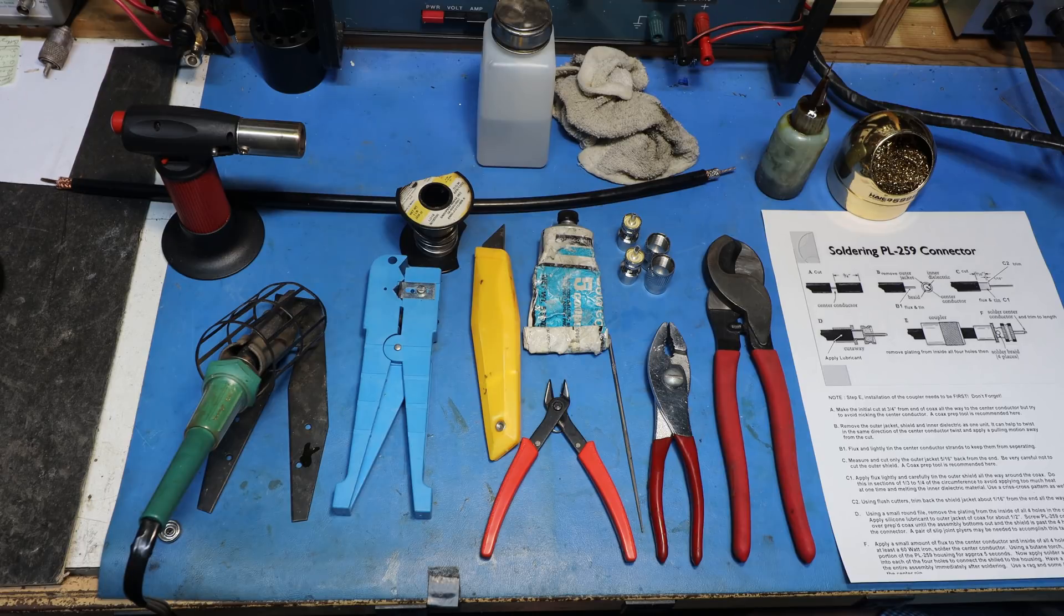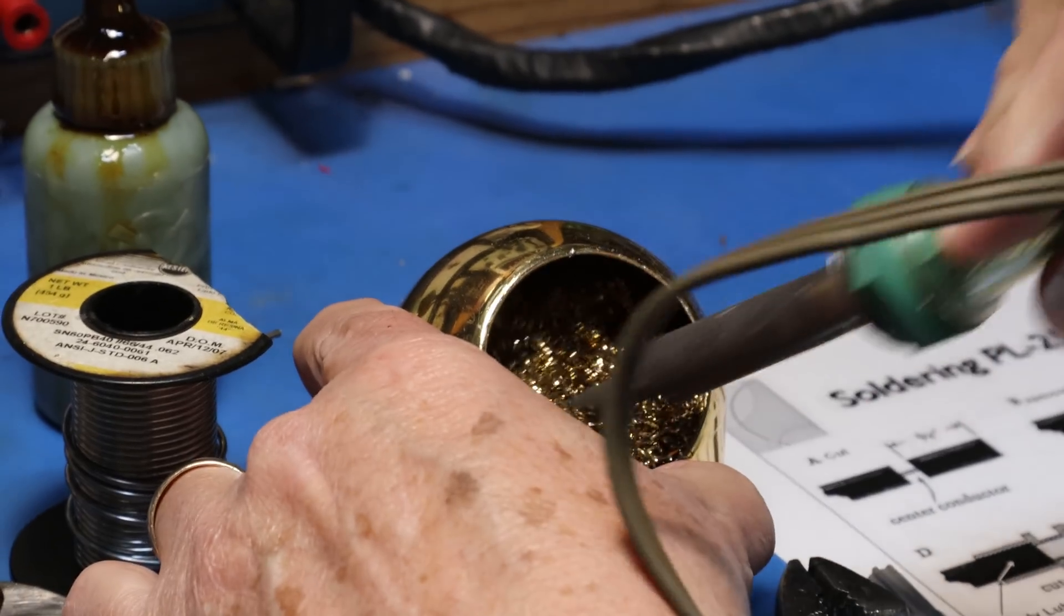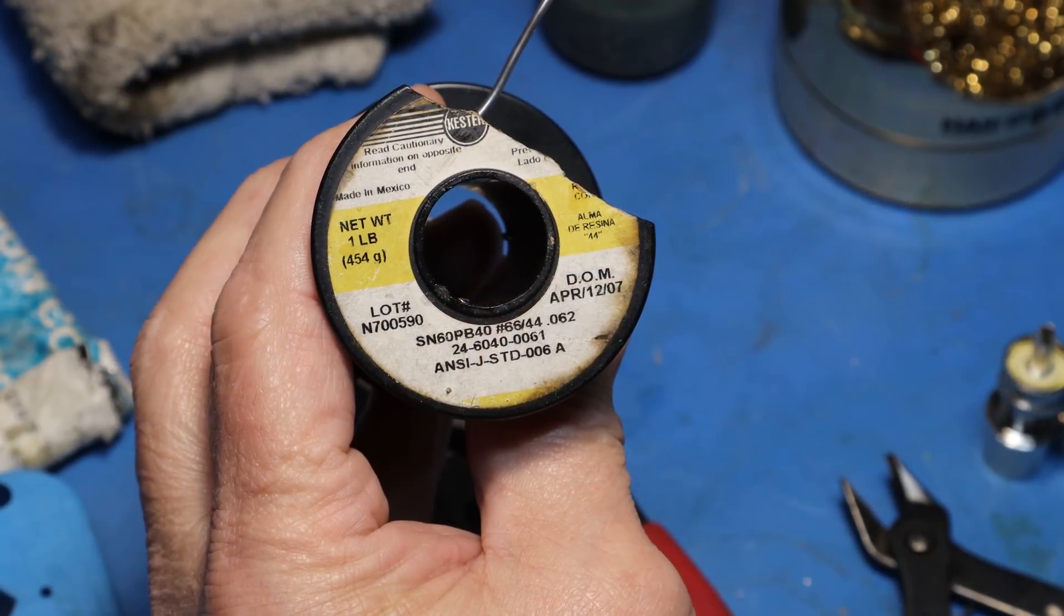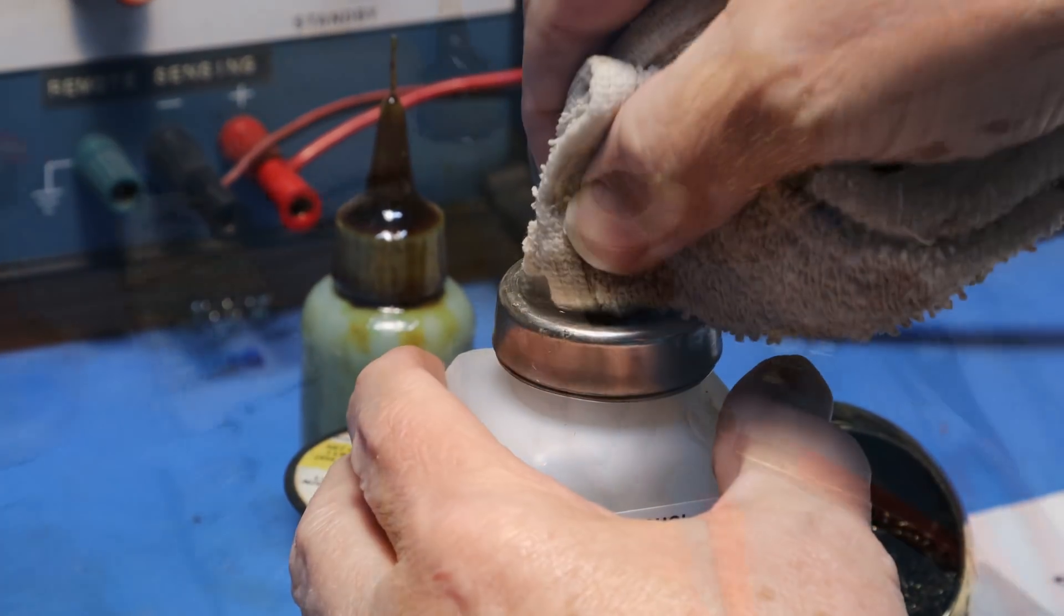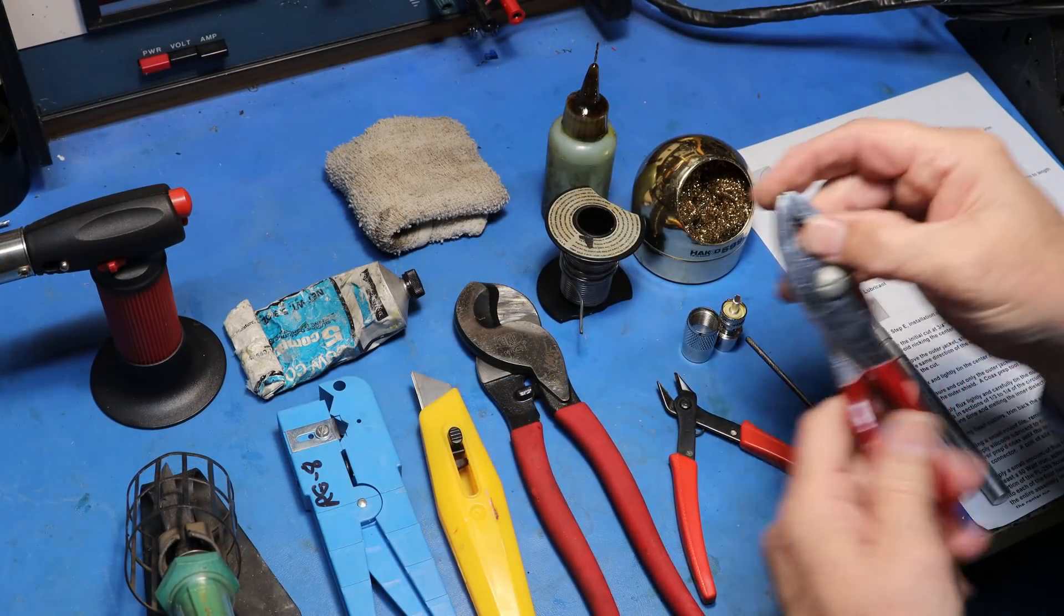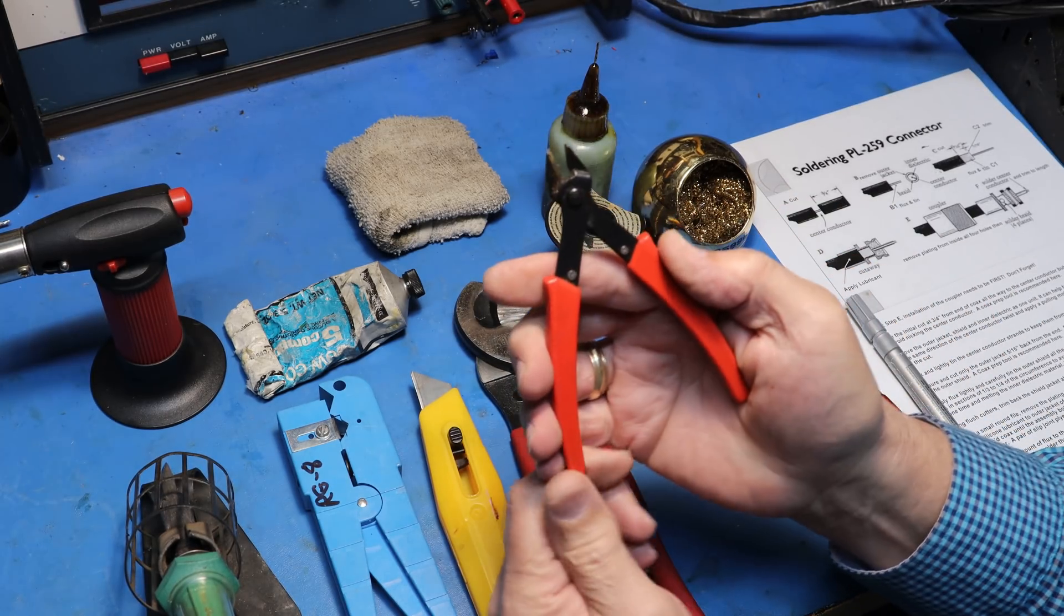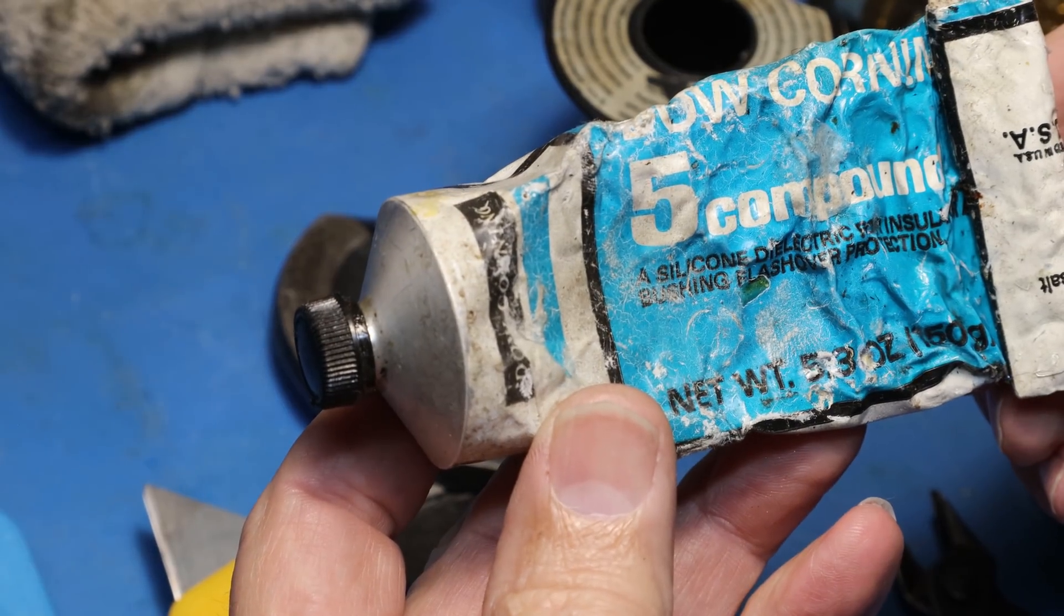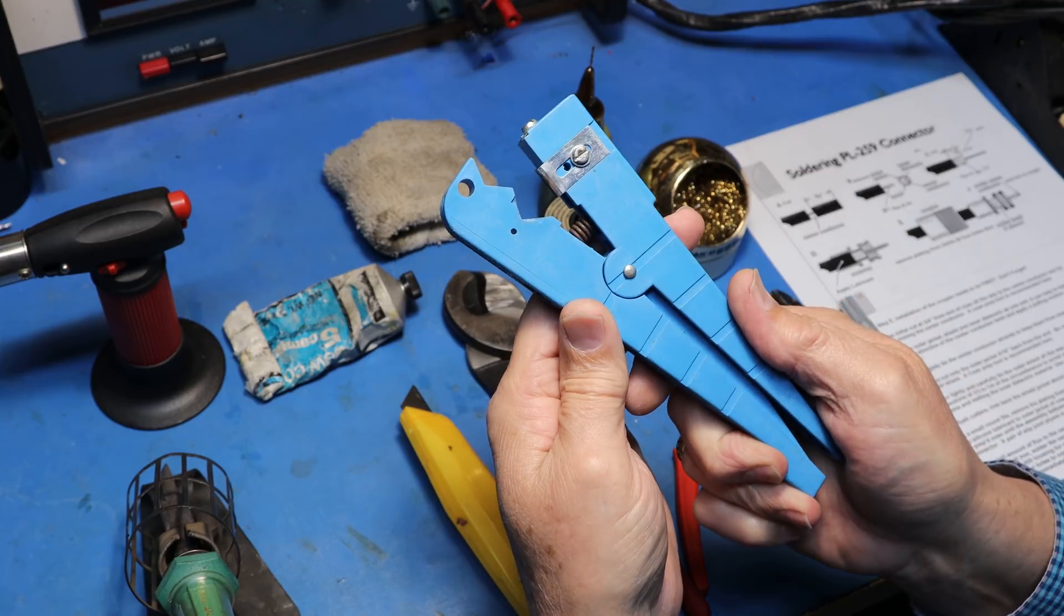Let's start by looking at some of the tools I will be using to install the connectors. A large flat point soldering iron, rosin core 6040 leaded solder, isopropyl alcohol, flux, slip joint pliers, large cutters, close cutting cutters, a butane torch, silicon lubricant, and either a razor blade or a coax prep tool.